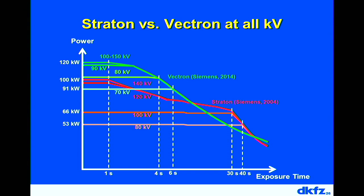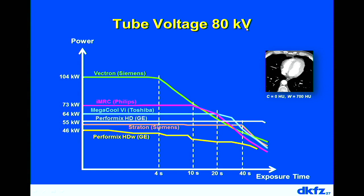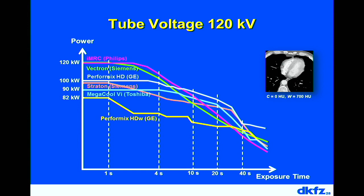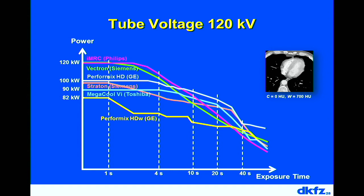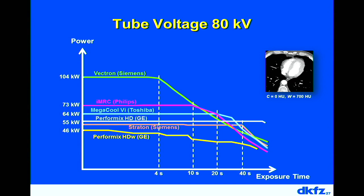Why do we need such high X-ray power? At low tube voltage — for example 80 kV — contrast agent in the heart produces better contrast than at high tube voltage. So we prefer low tube voltage scans for more contrast, which also reduces X-ray dose and the amount of contrast agent needed. With a pre-filter, low-energy photons are removed before reaching the patient; those photons would not make it through the patient anyway, so removing them reduces patient dose.